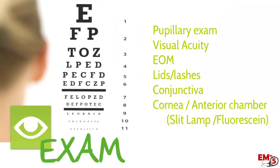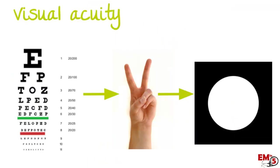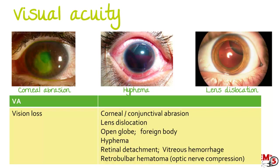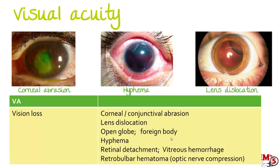Next let's look at visual acuity, assessed with a Snellen chart. If they can't do that, see if they can count how many fingers you're holding up. If they can't do that, see if they can detect light or dark. There are many things that can cause a decrease in visual acuity — simple things like a corneal abrasion or a hyphema, or more serious things like a retinal detachment or a retrobulbar hematoma.